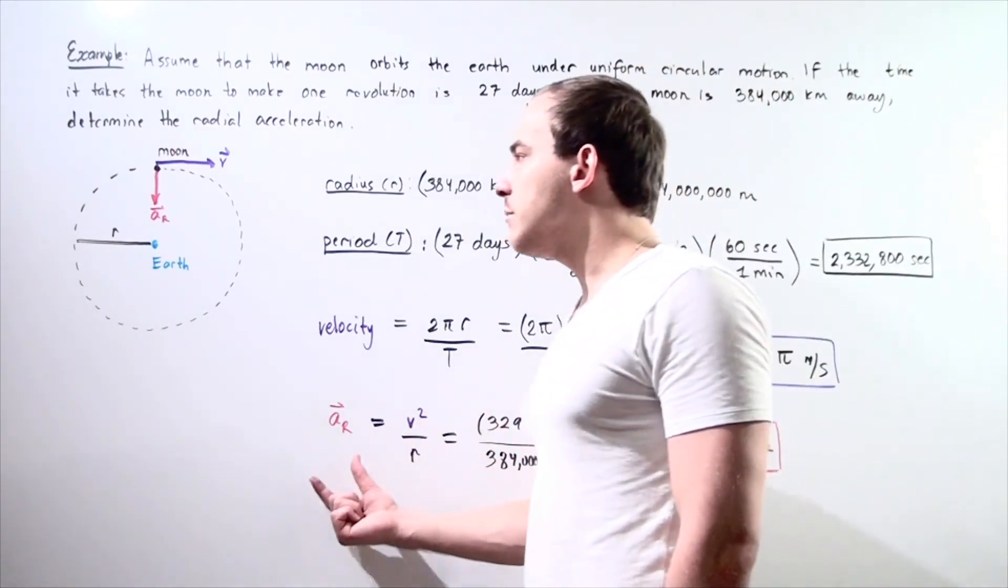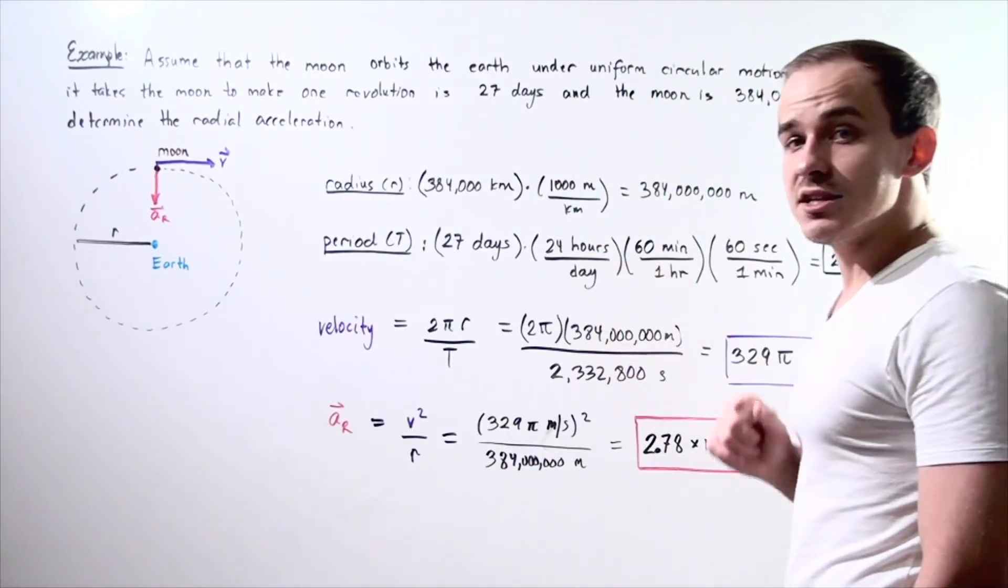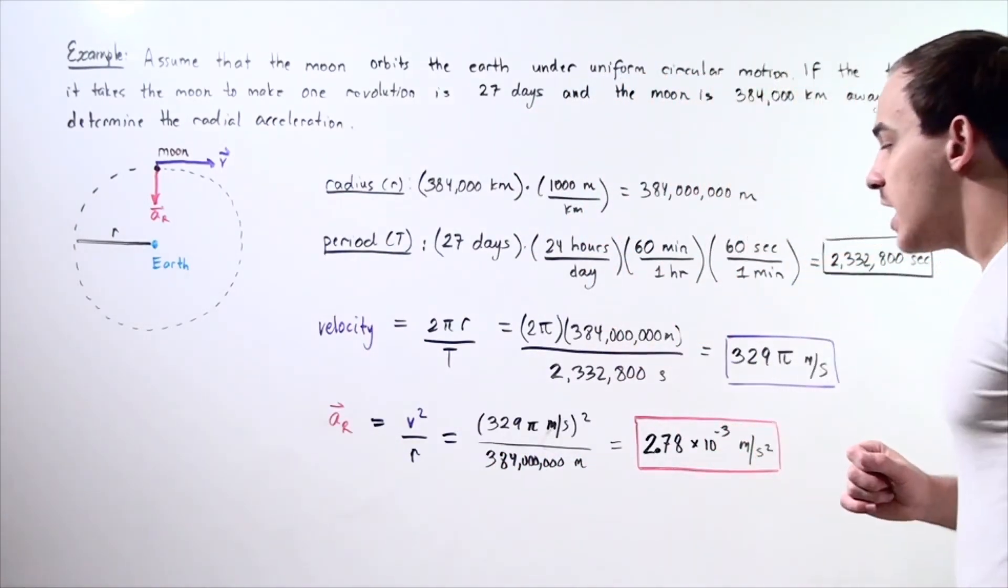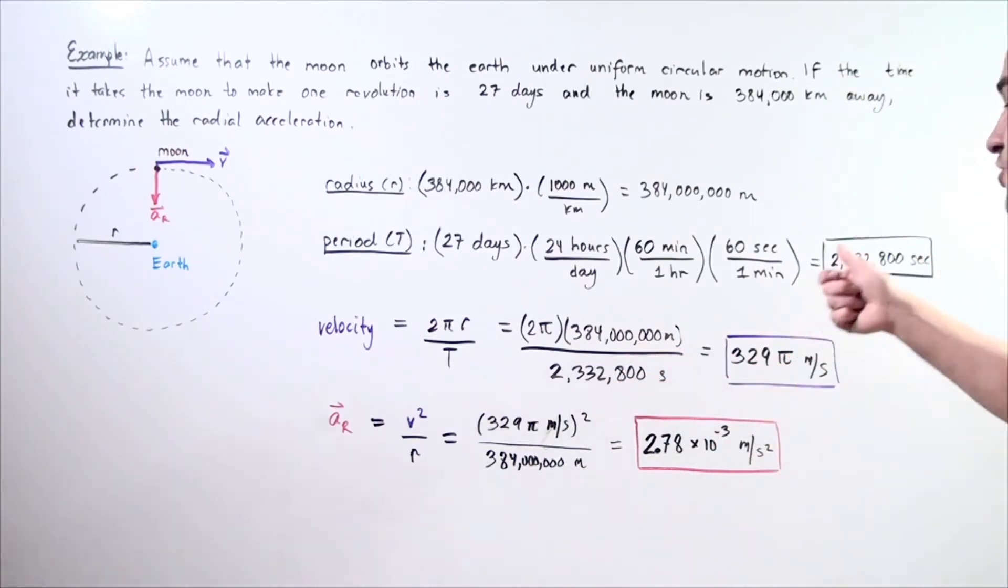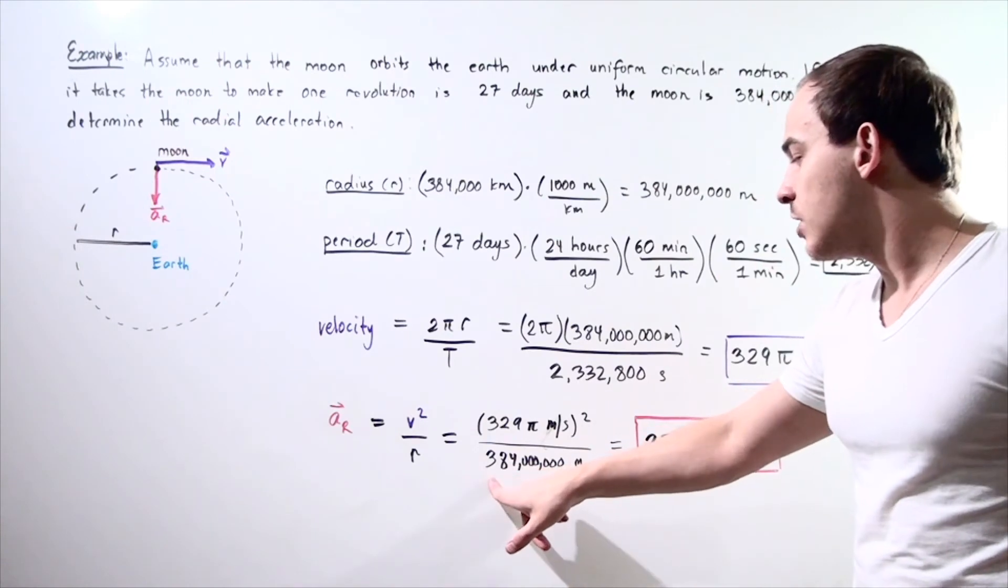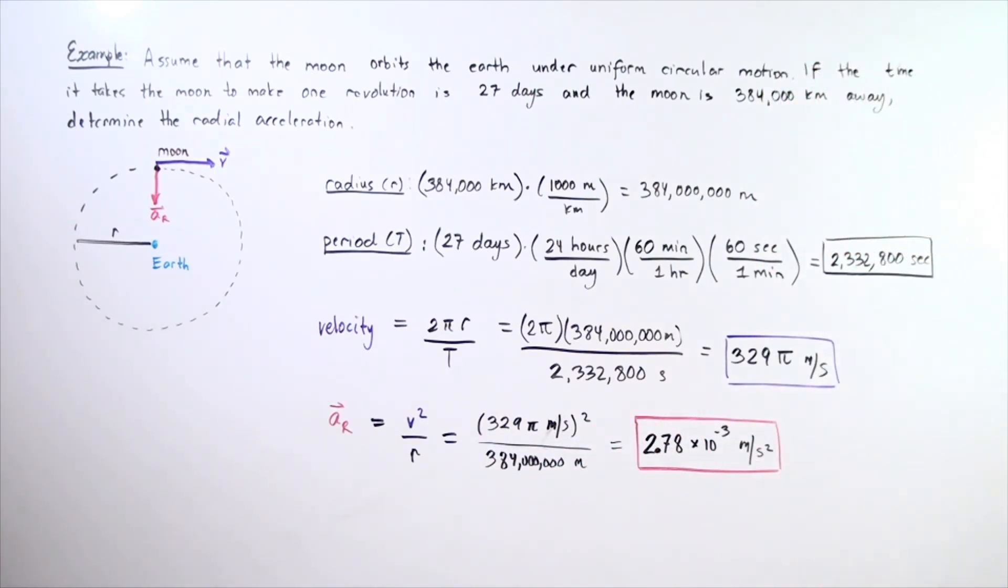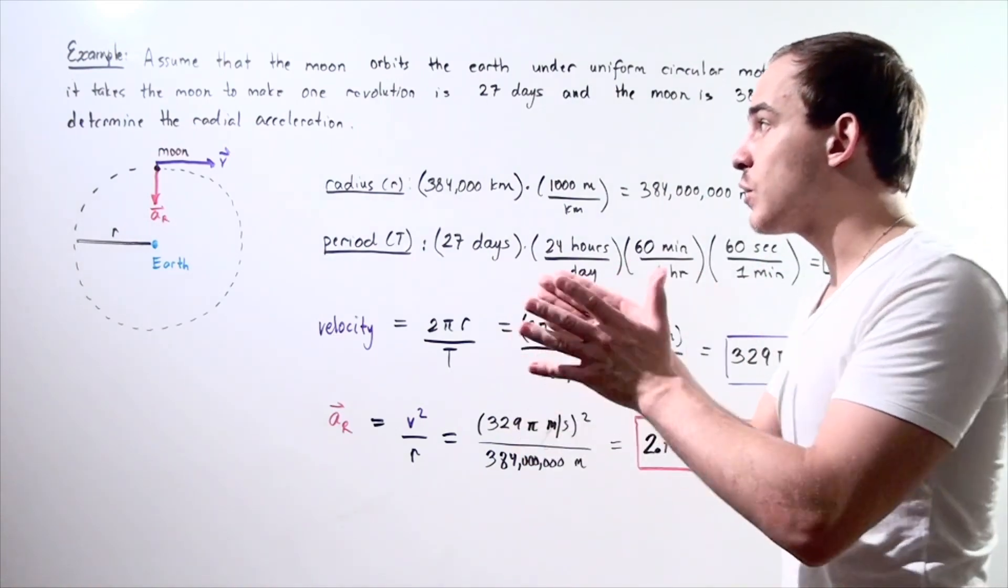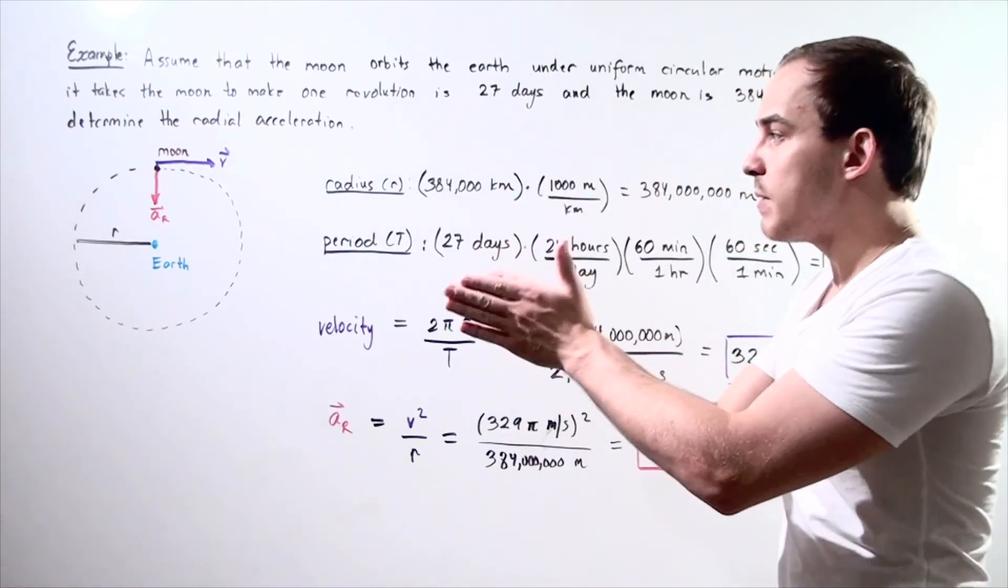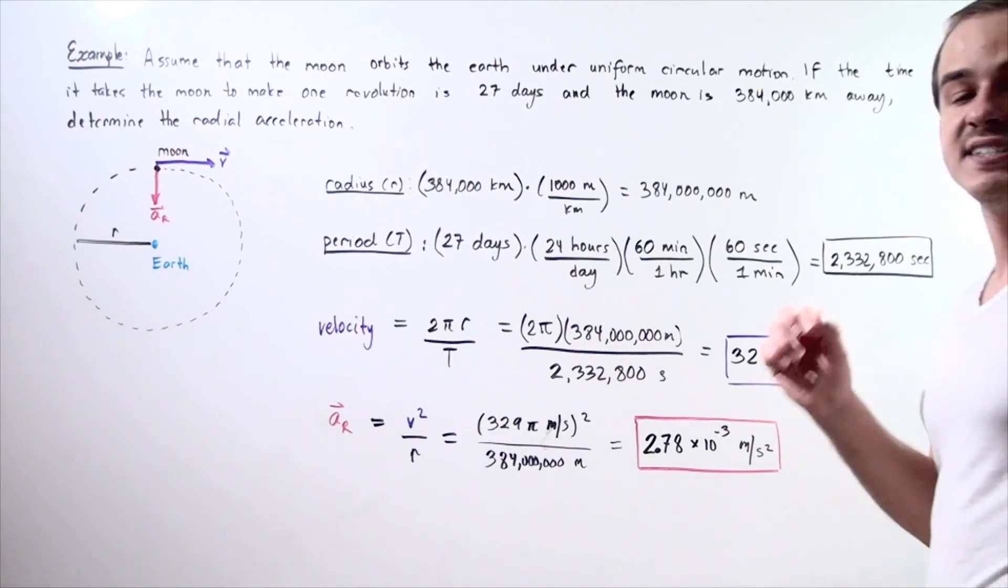Now we use our formula for radial acceleration, which is equal to our velocity squared divided by R. We take this value, we square it, and we divide it by 384 million meters. And we get the following value. Our radial or centripetal acceleration of the Moon with respect to the Earth is 2.78 times 10 to the negative 3 meters per second squared.